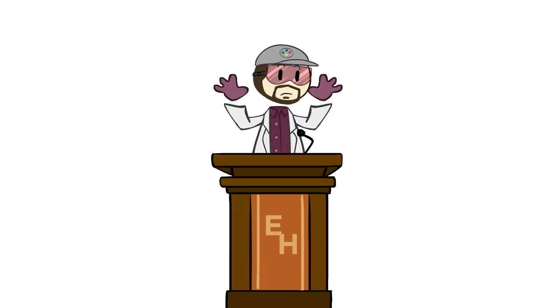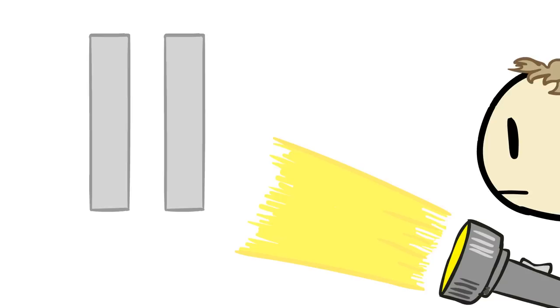Because here is where it gets really freaky. Remember how when Thomas was first doing his experiment, we said that if light were really a particle, we should just see two columns of light on the other side of his double slit paper?